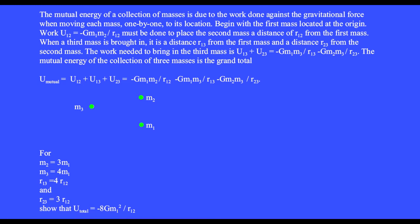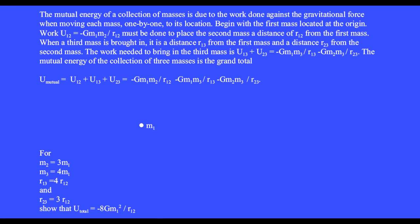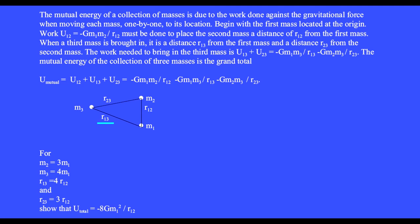Here is a collection of three mass points. Their mutual energy is due to the work done against the gravitational force when moving each mass one by one to its location. Begin with the first mass at the origin. To place the second mass a distance r12 from the first, the work U12 equals minus G m1 m2 over r12 must be done. When a third mass is brought in, it is a distance r13 from the first mass and r23 from the second. The work needed is U13 plus U23 equals minus G m1 m3 over r13 minus G m2 m3 over r23. The mutual energy of the collection of three masses is the grand total. For the given values, please show that the total is minus 8G m1 squared over r12.